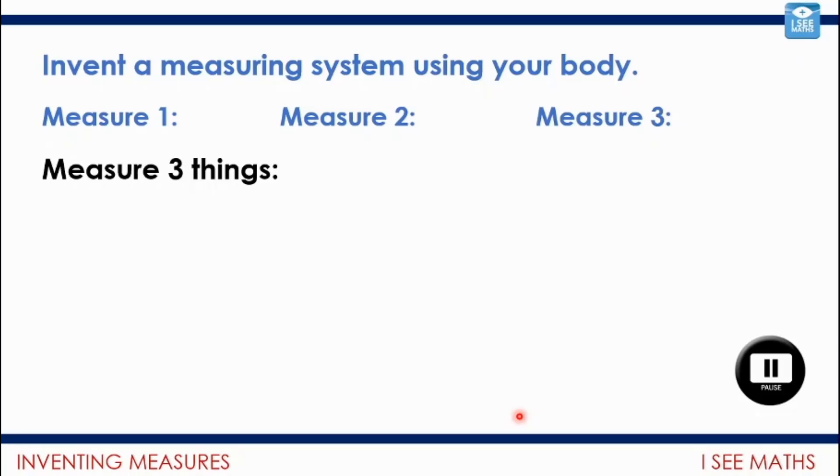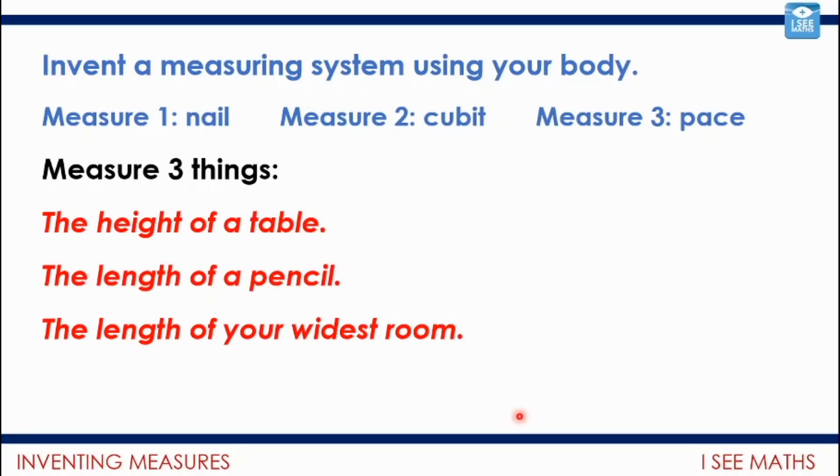Let's imagine the things you chose could have been, or the things I chose were maybe a nail. I could use a nail, my cubit, and a pace. And they're three things that I've selected to measure with. I decided to go for something that was smaller and something that's a bit larger and something that's a bit larger still, so I can measure smaller things and larger things. Anyway, whatever you've chosen, don't use my examples, use your examples. You're going to measure these three things. So you need a longer pause of the video for this one. Go off and measure the height of a table, the length of a pencil, and the length of your widest room. Pause the video and have a go at that.